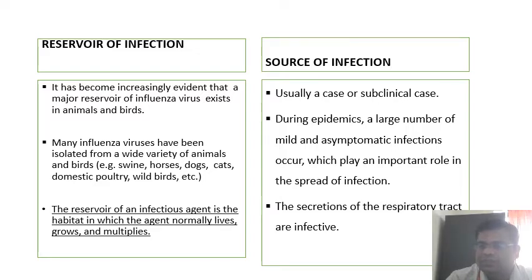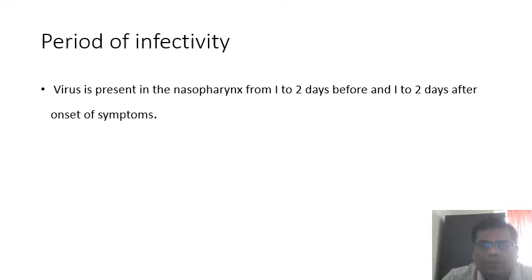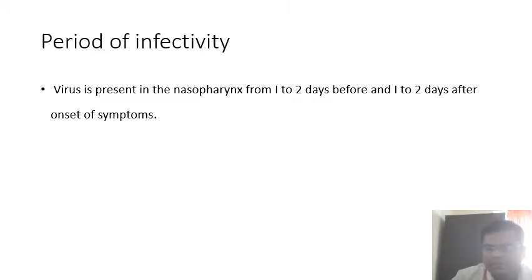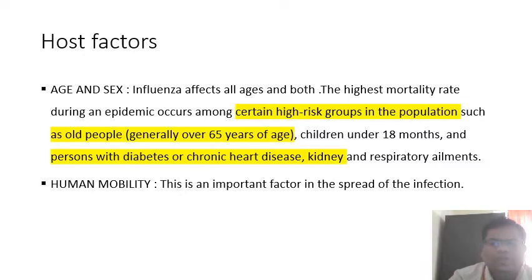The respiratory secretions of infected cases are infectious. The period of communicability — that is, the period of infectivity — is when the virus is present in the nasopharynx, from one to two days before and one to two days after the onset of symptoms. So the period of communicability is approximately four to five days, during which a person can transfer the virus to others.